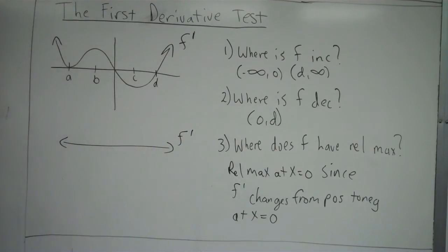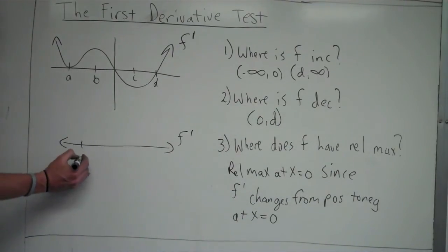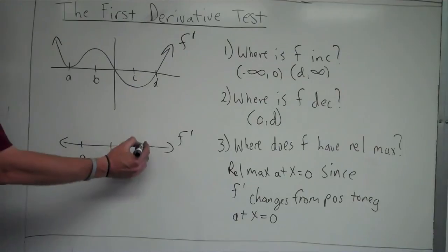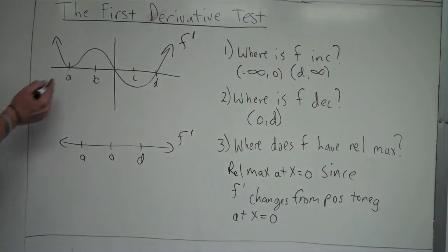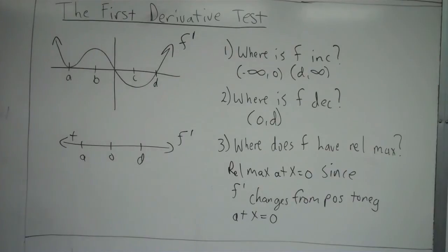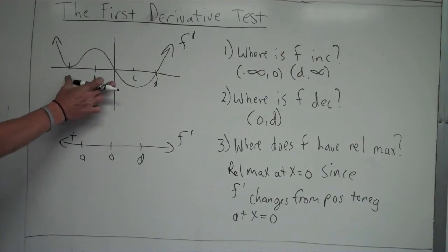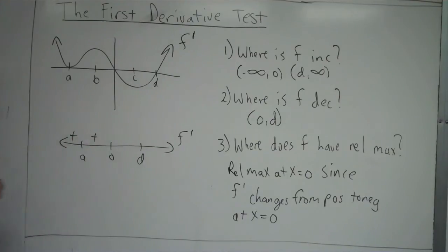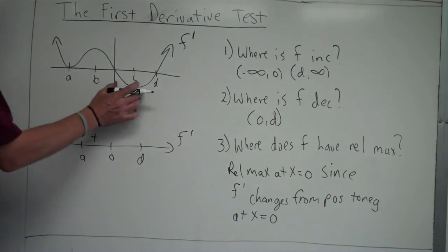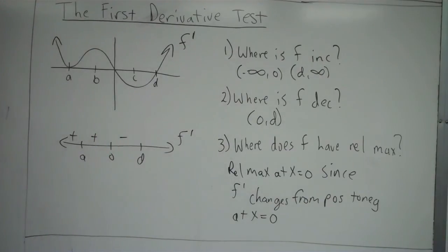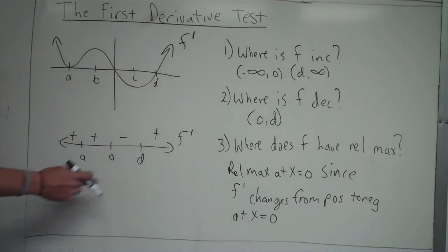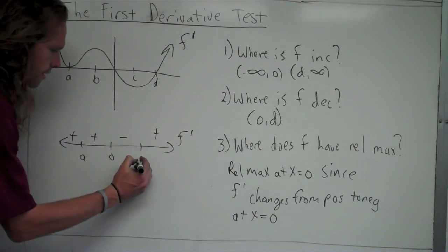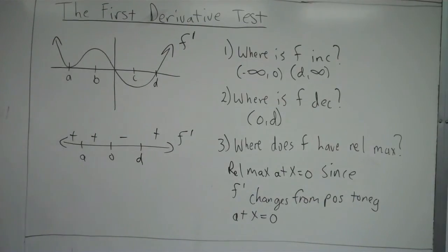On my first derivative sign chart, I put where f prime equals zero — that would be at a, at zero, and at d. That's where the y-value of f prime is zero. Then I look: to the left of a, f prime is above the x-axis, positive y-values — put a plus. Between a and zero, f prime is above the x-axis — positive, put a plus. Between zero and d, f prime is below the x-axis — negative, put a negative. From d to infinity, f prime is above the x-axis — positive.